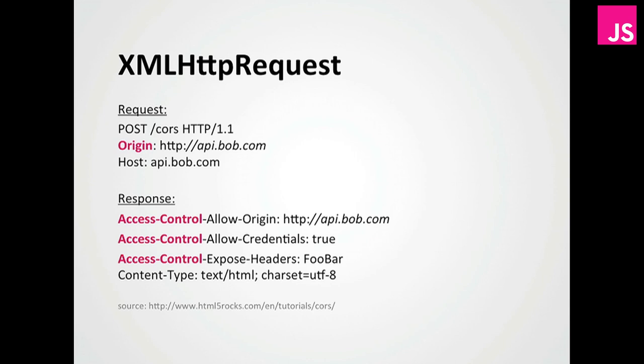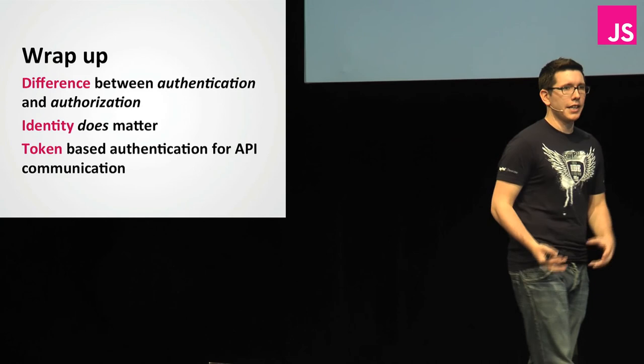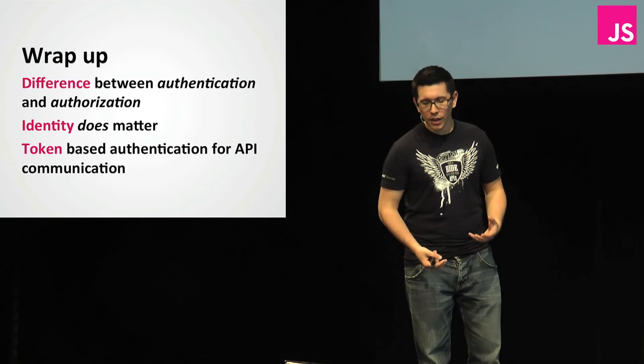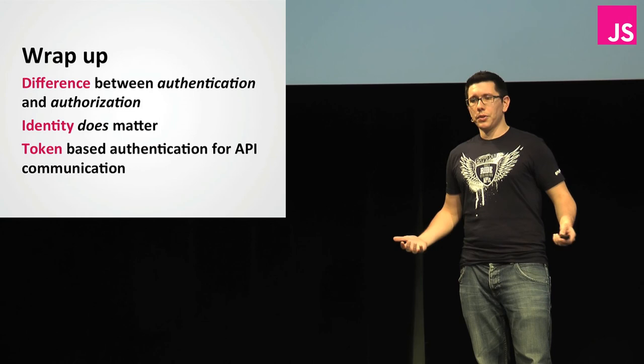Wrapping up: there's a big difference between authentication and authorization, and people shouldn't just use OAuth 2 to hack identification into their products. Identity obviously matters, so it makes sense to offer not just one identity provider but several. You might also want to think about token-based API communication to secure your client-server communication. Don't keep your users out. Thanks, and I'm happy to take Q&A.